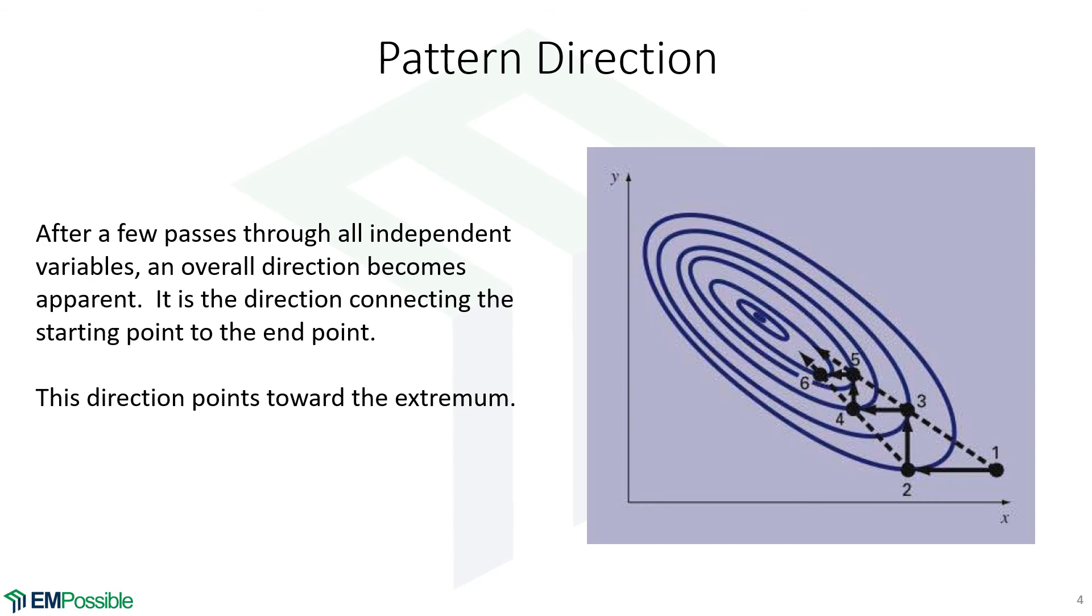When we do this, we notice sort of an overall direction developing. This is called the pattern direction. And the pattern direction really is in the direction of the extremum. And we can make the univariate search a little bit more efficient if we do a few iterations, look for a pattern direction.